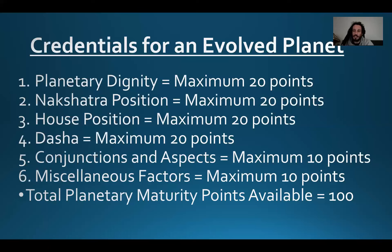Now I'd like to go through a couple of examples, pointing out in each one a planet which seems to be very evolved, and another planet which seems to be struggling in its evolution — meaning we have the potential to mature and evolve in our relationship with that planet.